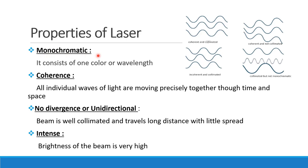Monochromatic beams — now we have a beam of light, and there are many waves in that light. All the waves have the same wavelength and frequency, meaning the same color. If the three waves in the figure all have the same frequency and wavelength, then that source is monochromatic.